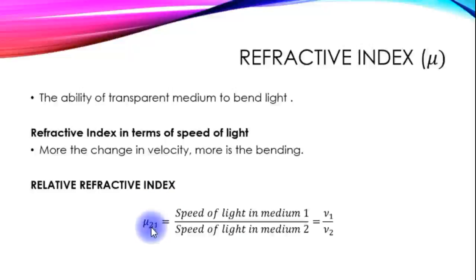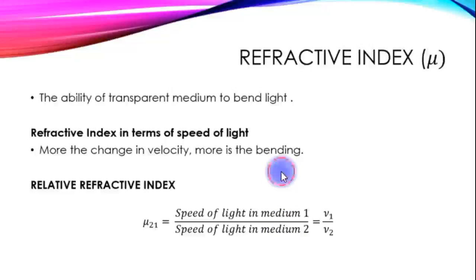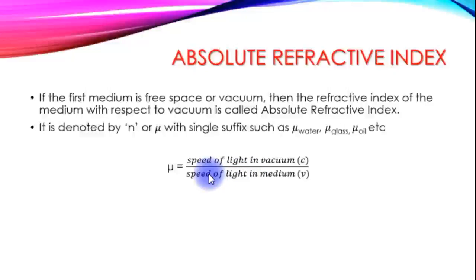The relative refractive index of medium 2 with respect to medium 1 equals the speed of light in medium 1 divided by the speed of light in medium 2. The absolute refractive index: if the first medium is free space or vacuum, then the refractive index of the medium with respect to vacuum is called the absolute refractive index.